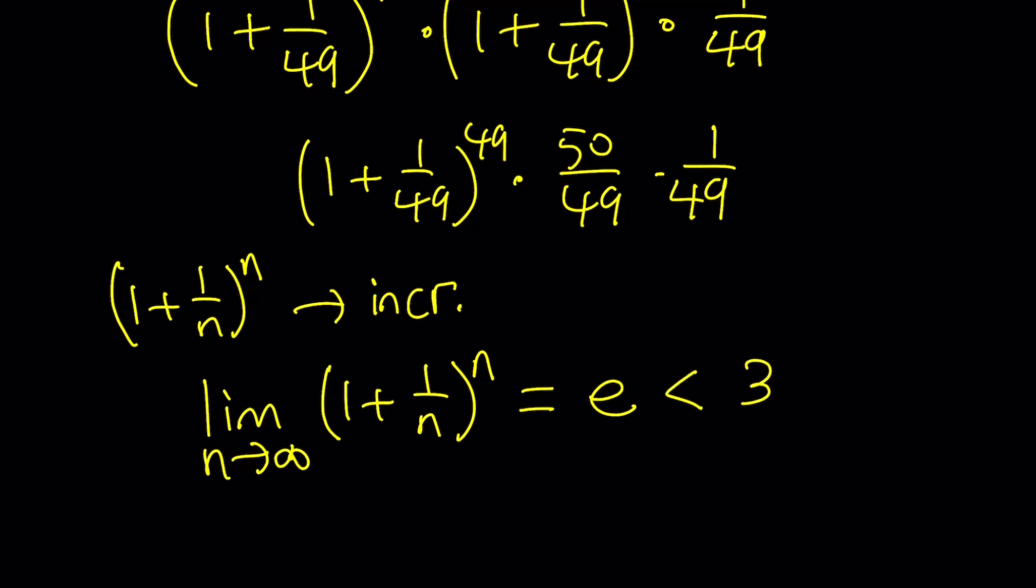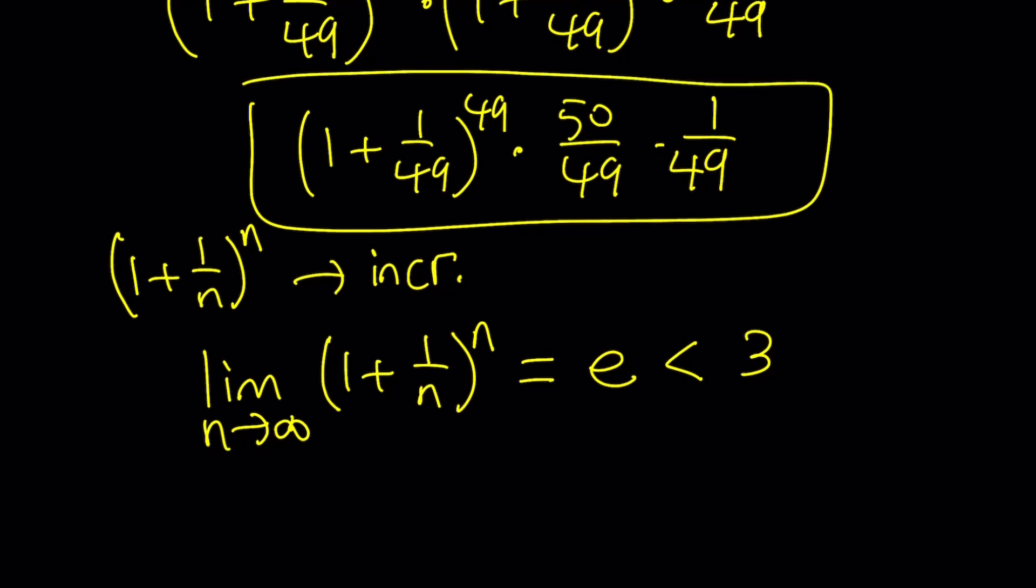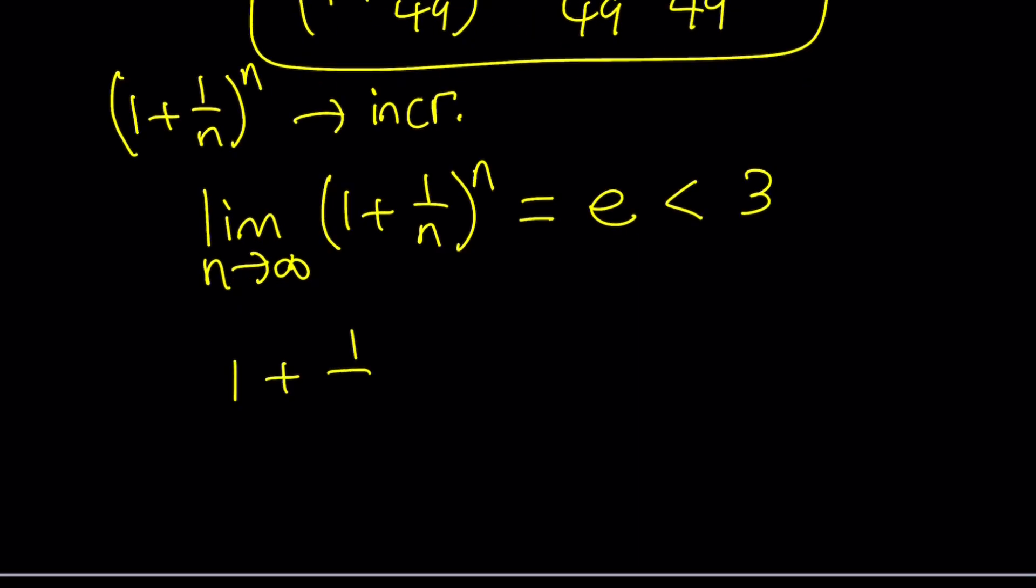Euler's number e is about 2.7, so it's less than 3. We have an increasing sequence, and its limit is less than 3, so all the terms are going to be less than 3. This means this expression, 1 plus 1 over 49 to the power 49, is going to be less than 3.